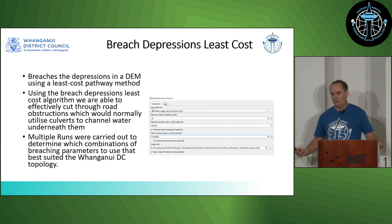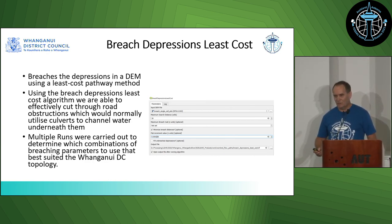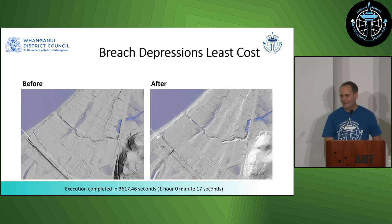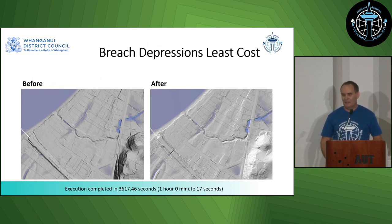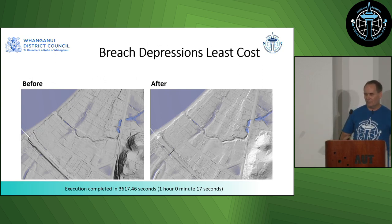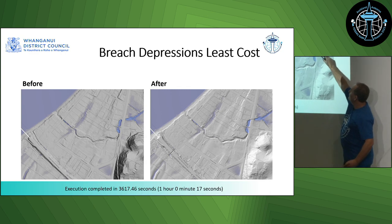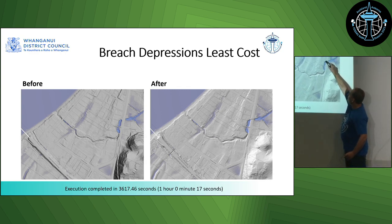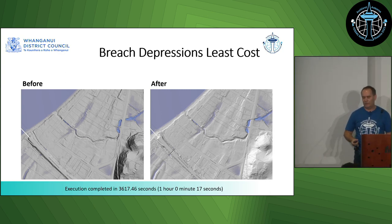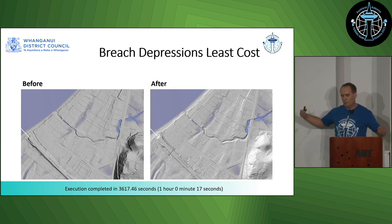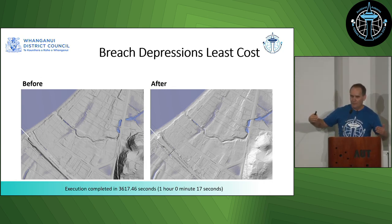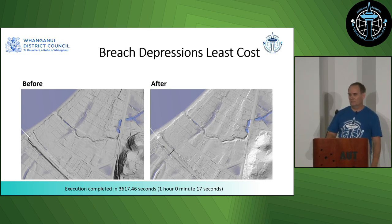The next step is breaching depressions using the least cost algorithm. Looking at the before and after, the key thing is if you look at this road up here, you can see it's been breached across the road to continue that flow path. That's essentially what the algorithm does — it allows you to puncture features in your surface model, like roads and other obstacles. That particular process took an hour to run.